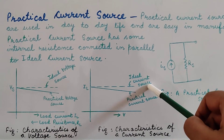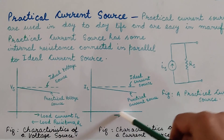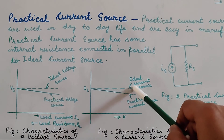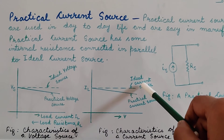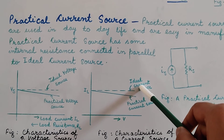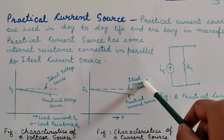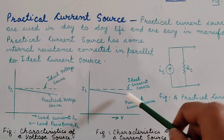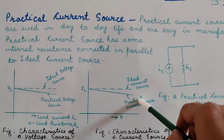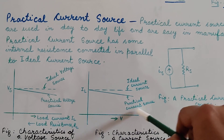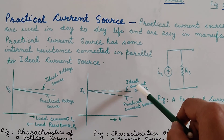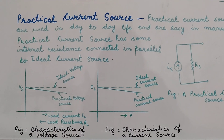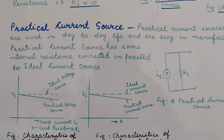The graph of the ideal current source is a straight line parallel to the axis and the value of the current remains constant throughout — it does not change with the change in the value of the resistance. Whereas in the case of a practical current source, the value of the current is not constant. Hope the concept of the ideal and the practical current and voltage source is clear to all of you.